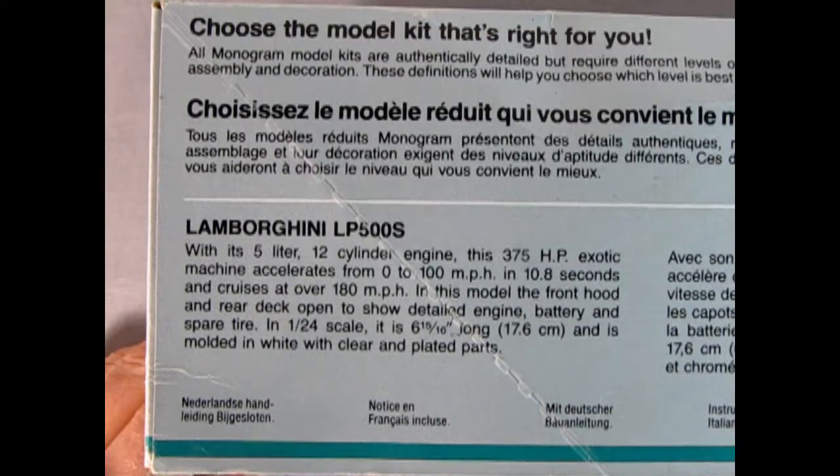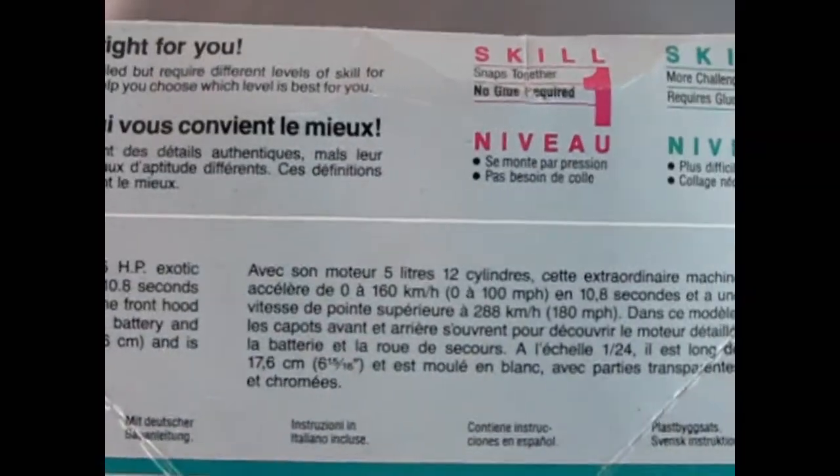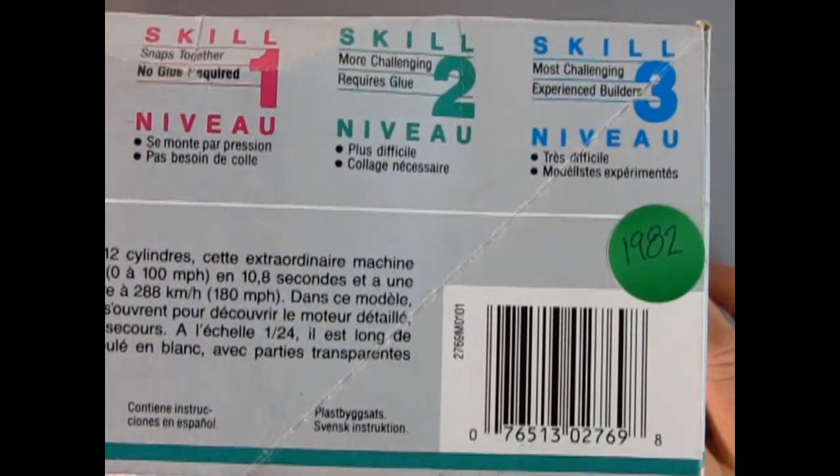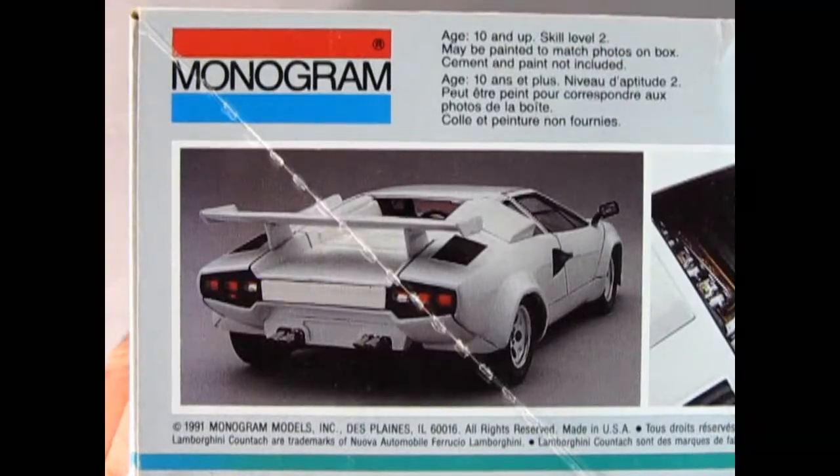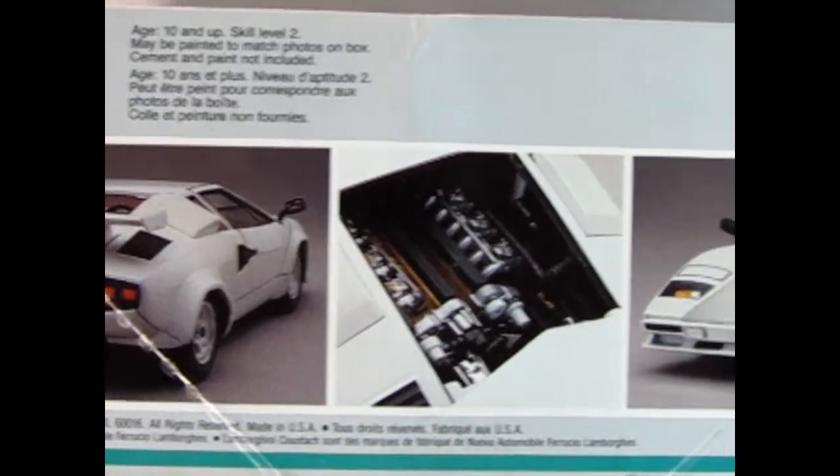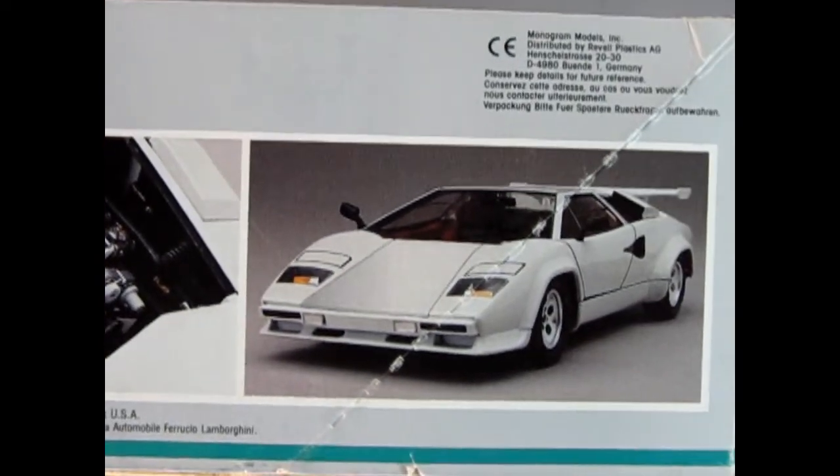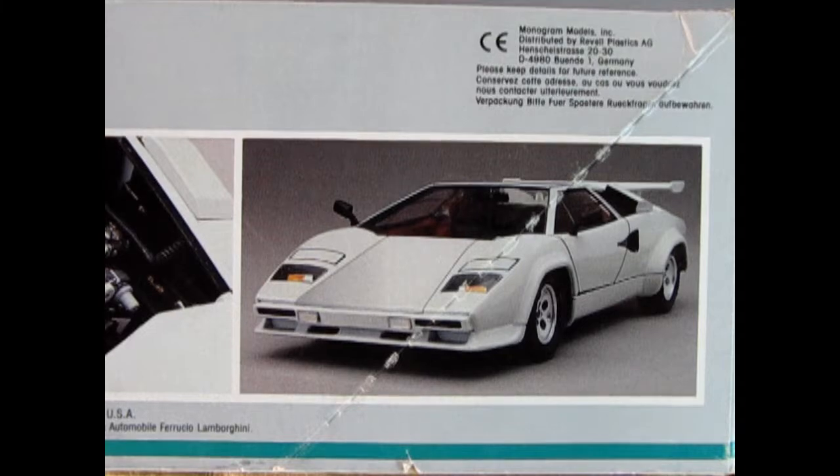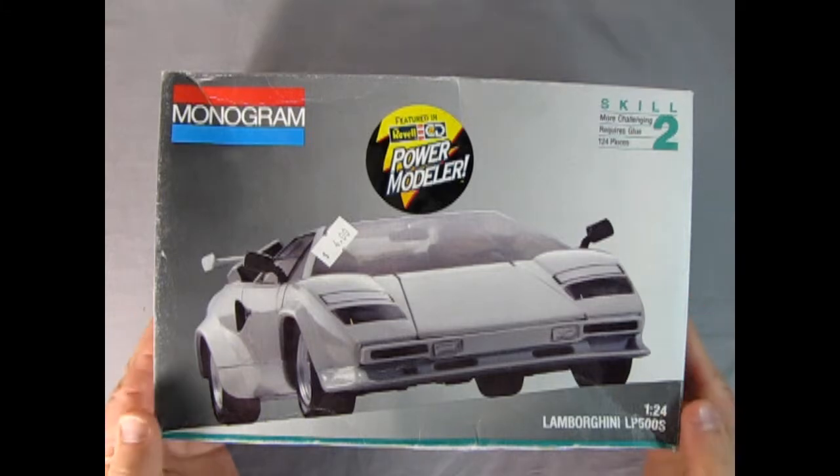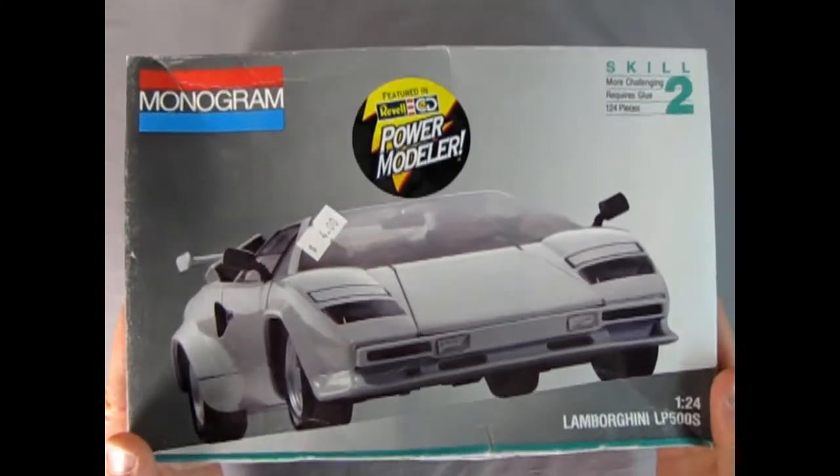On this side of the kit we can read all about the Lamborghini LP500S with its 5-liter 12-cylinder engine, and we get an understanding of skill level one, two, and three. This edition came out in 1991 and was featured in the Revell CD Power Modeler. You built the model and then actually raced it in a video game style street race, really cool stuff for back in the day. I found this one for four dollars at a Salvation Army.